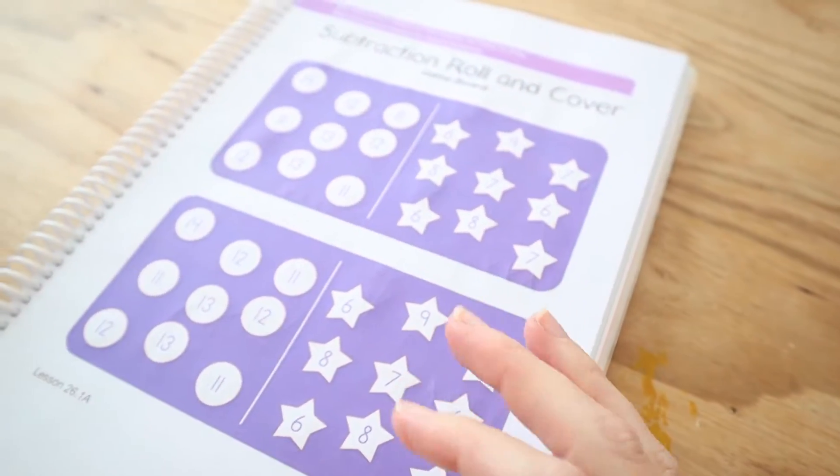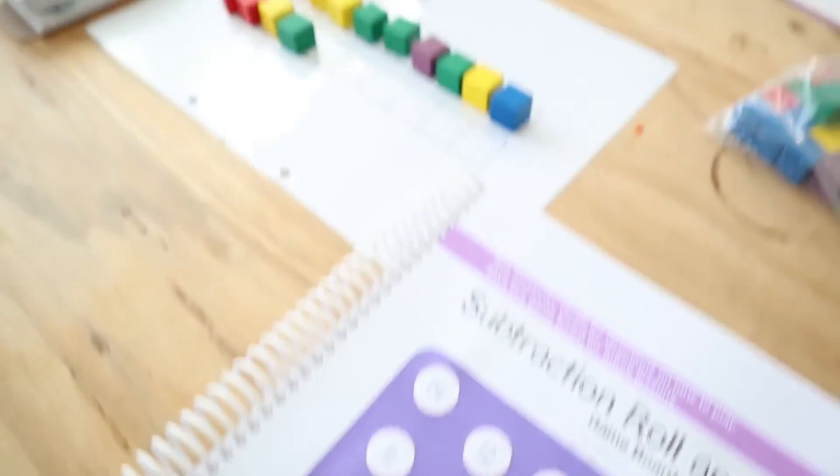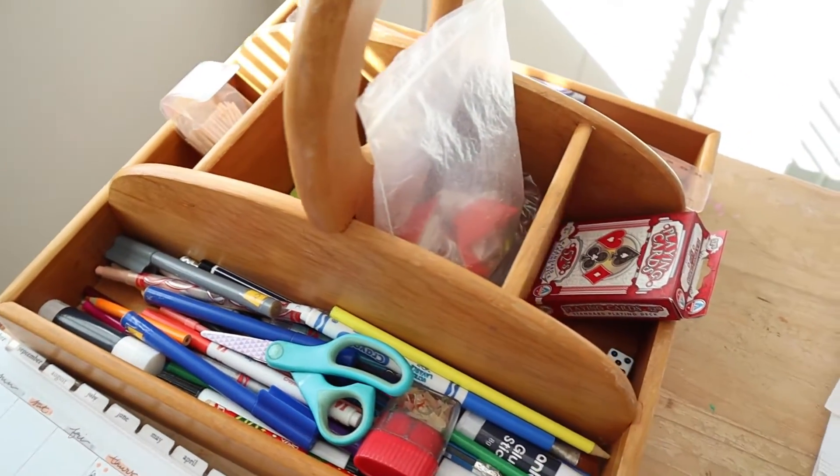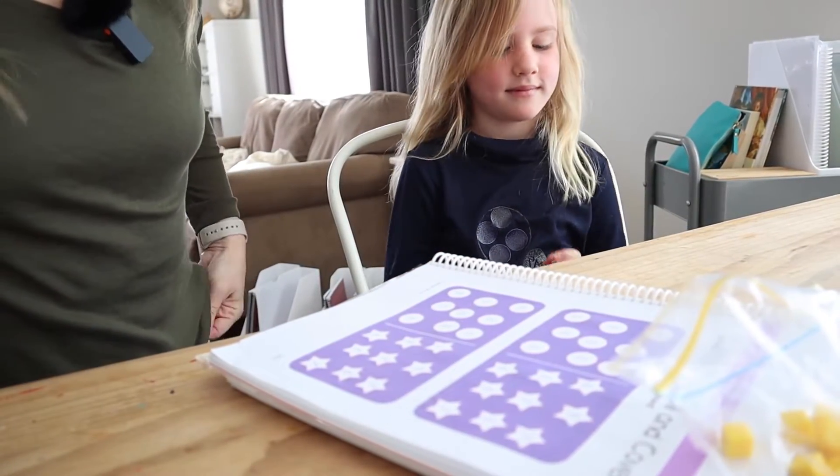Annie, do you want to grab a dice? And do you want to grab the other counters, the yellow ones? Well, it should, hold on. I'll just grab it right here. So we keep our, the dice is right here. All right, ready? So you want to roll first? Go for it.